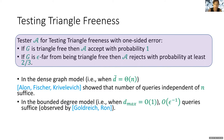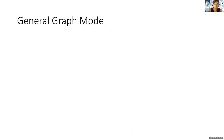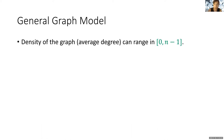Goldreich and Rohan observed that in the bounded degree model, one can test triangle-freeness with query complexity which is linear in 1 over epsilon. Alon, Kaufmann, Krivilevich, and Rohan were the first to study the problem in the general model. In the general model, the density of the graph — namely the average degree — is not known in advance and can range between 0 and n minus 1.